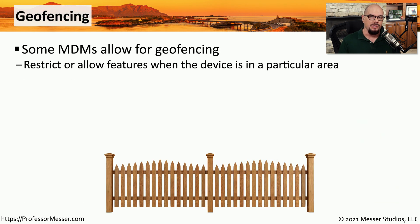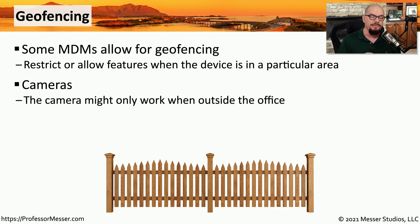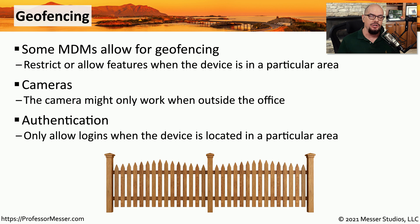On some wireless networks, we might want to allow or disallow access based on where someone is physically located. We can do this using geofencing, which identifies the location of a user — often using GPS — and then provides or denies access based on their physical location. We can even enable or disable certain features of a mobile device using geofencing. For example, if someone is inside the building, we might restrict their camera, but when they leave, they're outside the geofence and the camera works normally. We can also integrate this with authentication to verify someone is physically in the building before allowing access.